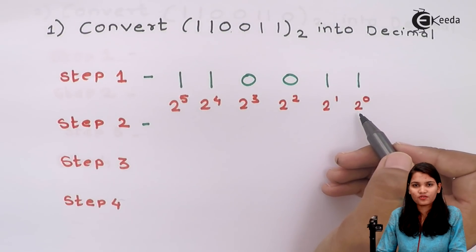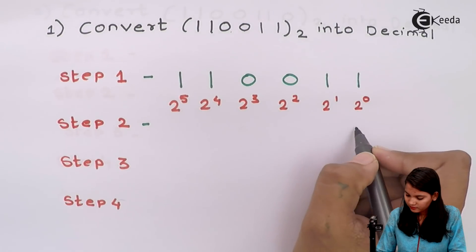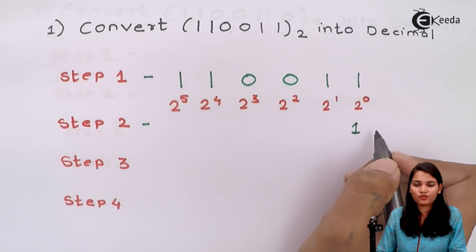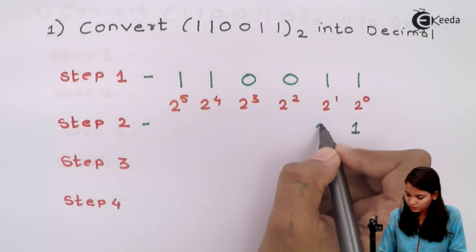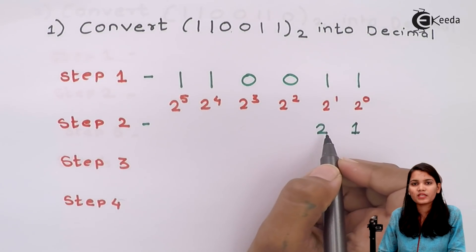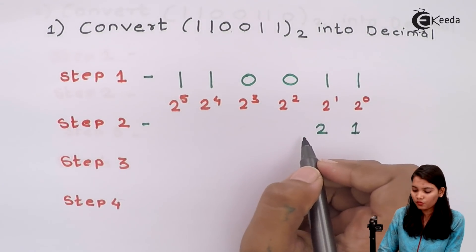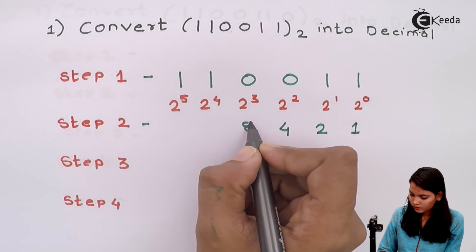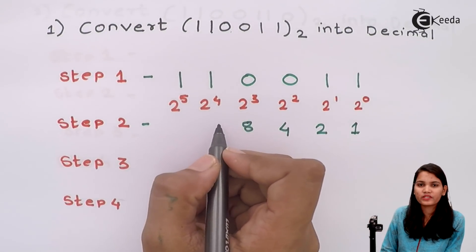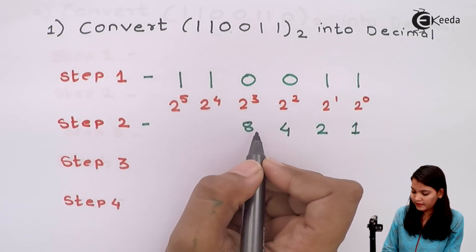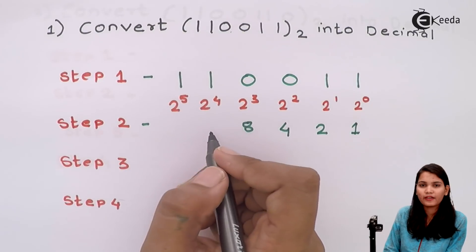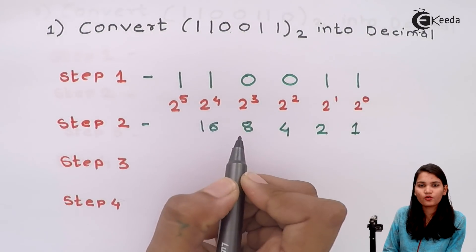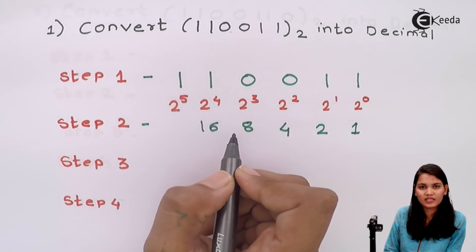2 raise to 0 gives 1, 2 raise to 1 gives 2, 2 raise to 2 is 4, 2 raise to 3 is 8, 2 raise to 4 is 16, and 2 raise to 5 is 32.